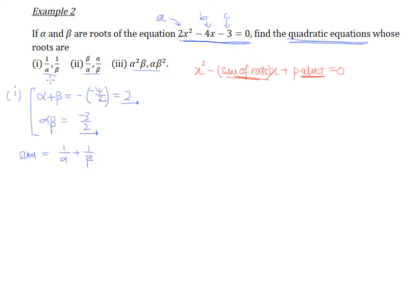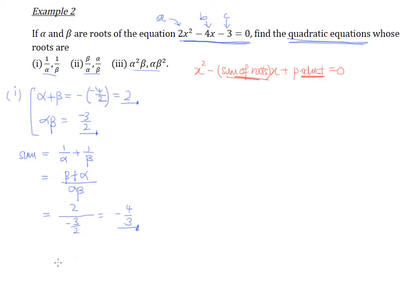The sum of roots, which is 1/alpha + 1/beta, by doing common denominator gives us (beta + alpha) over (alpha·beta). We know that alpha + beta = 2 and alpha·beta = -3/2. So this becomes 2 divided by (-3/2), which gives us negative 4/3. That is the sum of roots, which will become the coefficient of X in the equation we are trying to find.